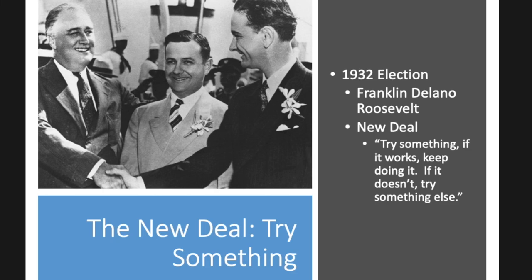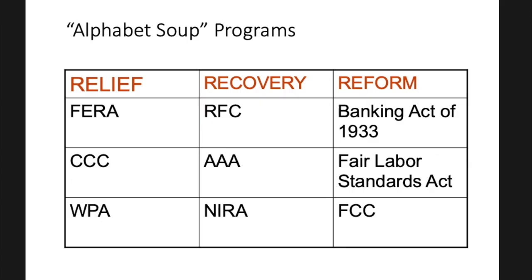In 1932, President Franklin Delano Roosevelt was elected largely because of the Great Depression and the general belief that his predecessor, President Herbert Hoover, wasn't doing anything about it or didn't grasp the severity of the Depression. Hoover was voted out of office, Franklin Delano Roosevelt came in, and his program was called The New Deal. He really didn't have a definitive plan but wanted to try something — if it worked, keep doing it; if it didn't, try something else. That was the motto for The New Deal.